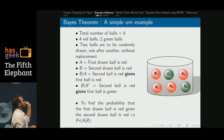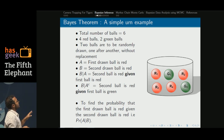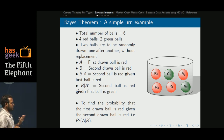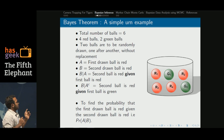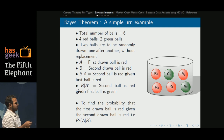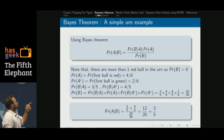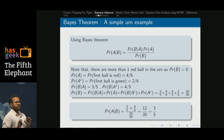I will give an example to explain the theorem. Suppose we have an urn with 4 red balls and 2 green balls. Two balls are randomly drawn one after another without replacement. There are two events: the first ball is drawn, and the second ball is drawn. We want to find the probability that the first ball is red given the second ball is also red. The probability of A — the first ball being red — is 4 out of 6, since there are 6 total balls.